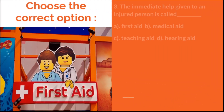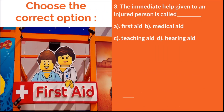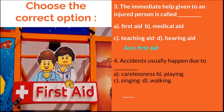Next question: The immediate help given to an injured person is called dash. Options are first aid, medical aid, teaching aid, and hearing aid. The answer is first aid. Fourth question: Accidents usually happen due to dash. Options are carelessness, playing, singing, and walking. The answer is carelessness.